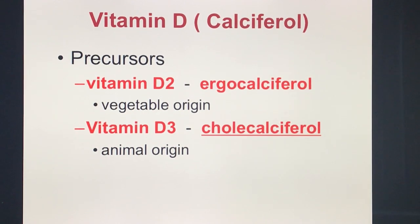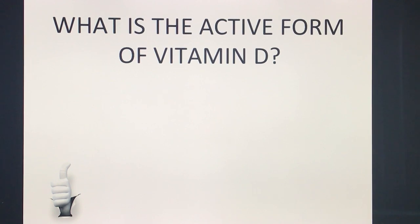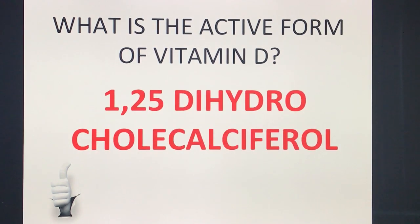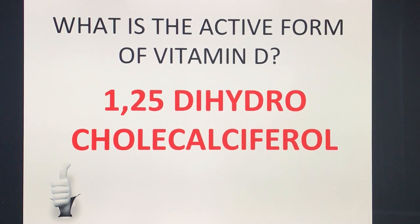For a board recall: the active form of Vitamin D is 1,25-dihydroxycholecalciferol. Memorize that number — 1,25-dihydroxycholecalciferol. Always remember from basic physiology that the conversion of Vitamin D into its active form occurs in the kidneys.